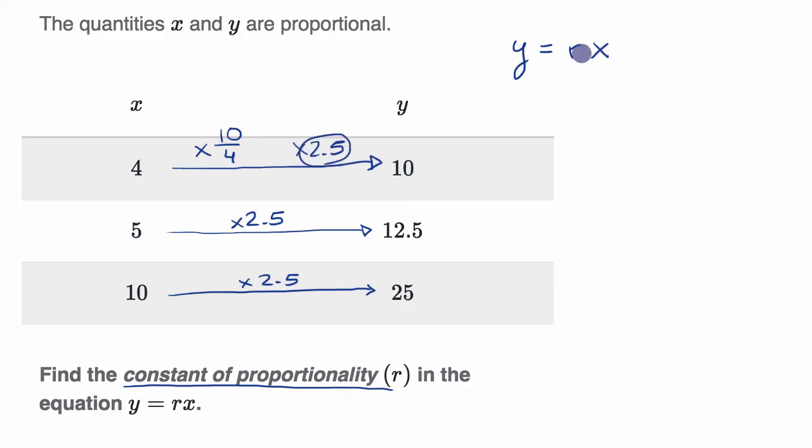So in every case, I take my x, multiply it by the constant of proportionality 2.5, I get my y. So what's the constant of proportionality? It is 2.5.